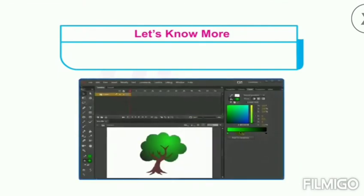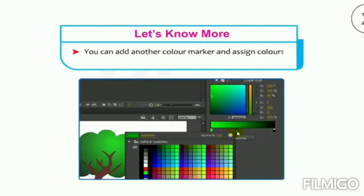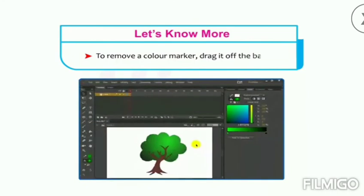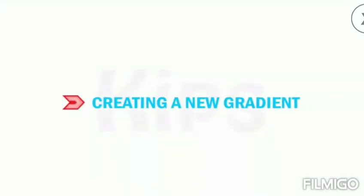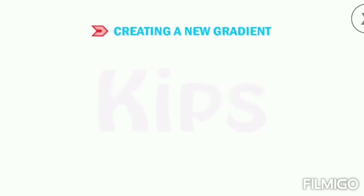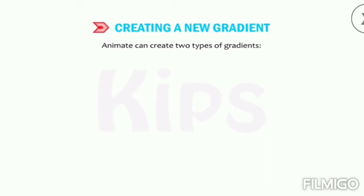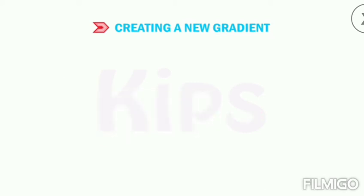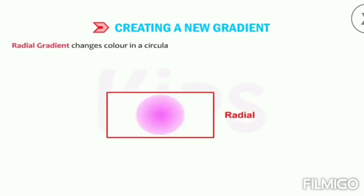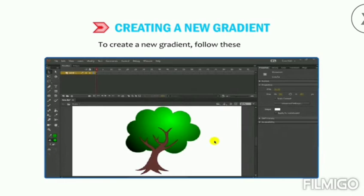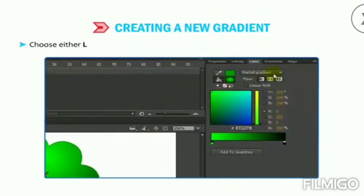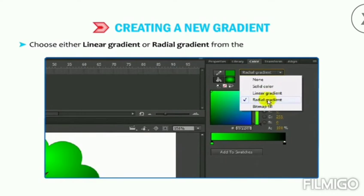You can add another color marker by clicking below the gradient bar, and remove a marker by dragging it off the bar. Animate can create two types of gradients: a Linear gradient changes color from start to end point in a straight line, while a Radial gradient changes color in a circular outward direction from the focal point. To create a new gradient, choose Window then Color to display the Color panel, then choose Linear Gradient or Radial Gradient from the Color Type drop-down list.